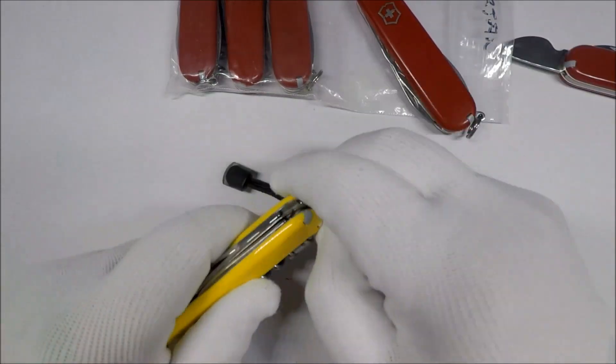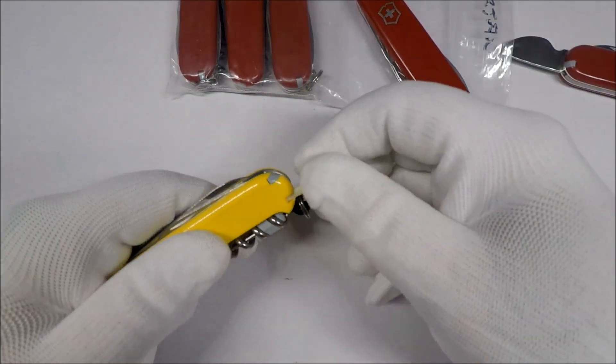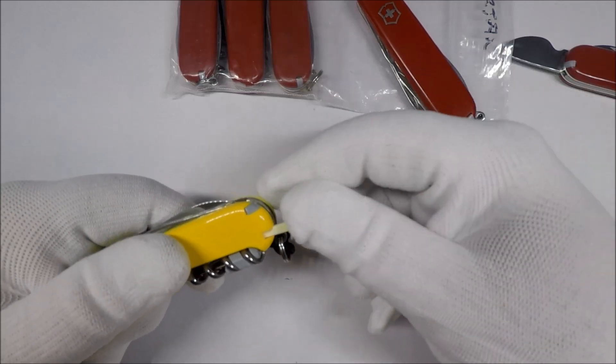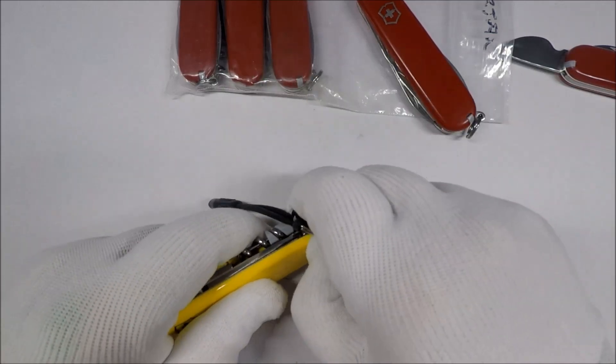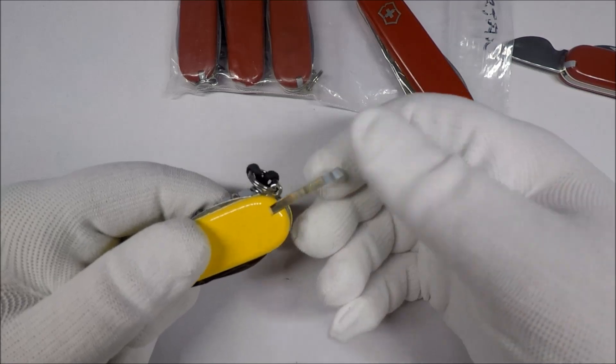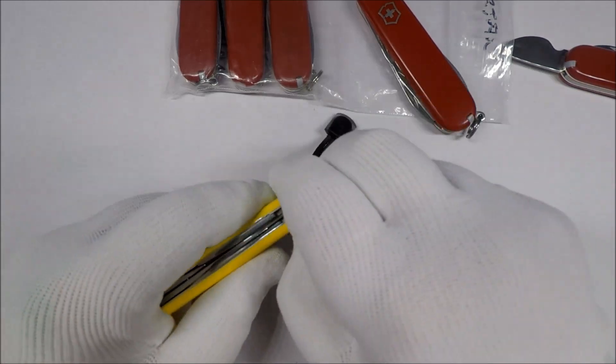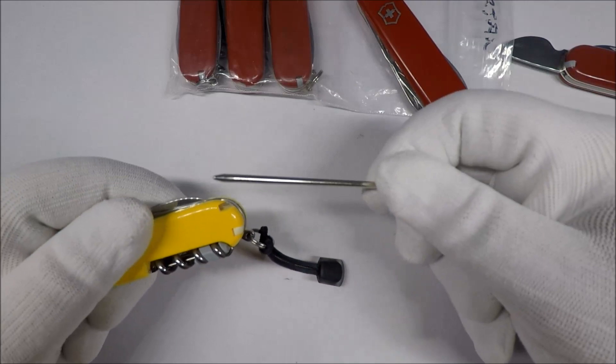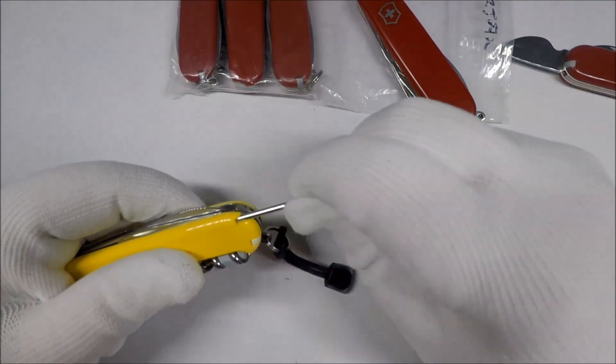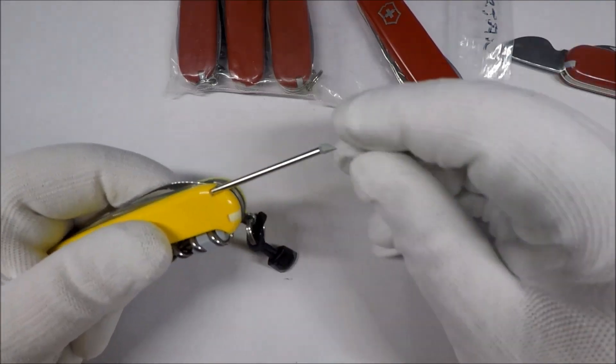And the Swiss Army knife plus scales, what it is, is in addition to the toothpick, which is brand new and not nasty like the other one, and tweezers—again, brand new and not icky—is it has space for the ballpoint pen. And this is like a pressurized ballpoint pen.